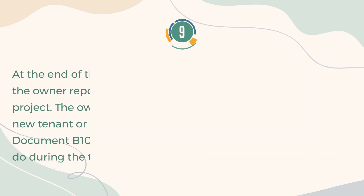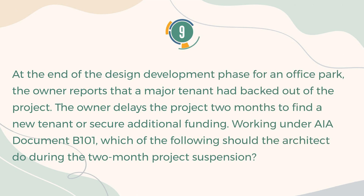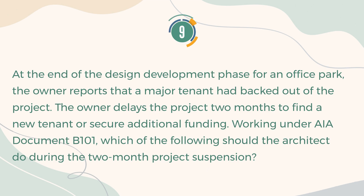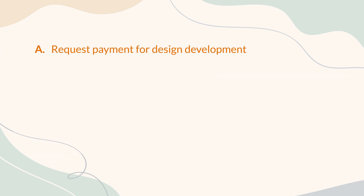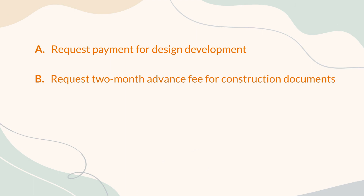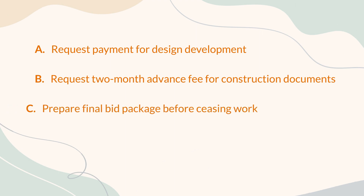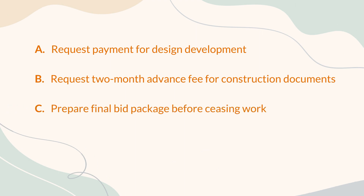Number 9. At the end of the design development phase for an office park, the owner reports that a major tenant had backed out of the project. The owner delays the project two months to find a new tenant or secure additional funding. Working under AIA document B101, which of the following should the architect do during the two-month project suspension? A. Request payment for design development. B. Request a two-month advance fee for construction documents. C. Prepare final bid package before ceasing work. D. Assist the owner in lining up a new tenant.